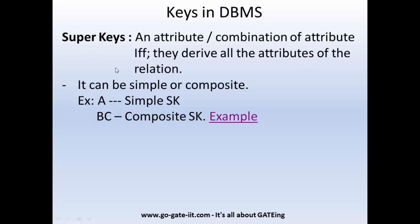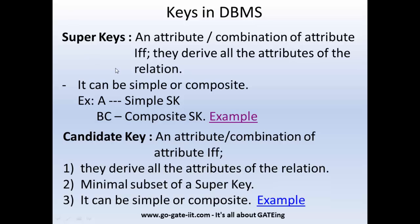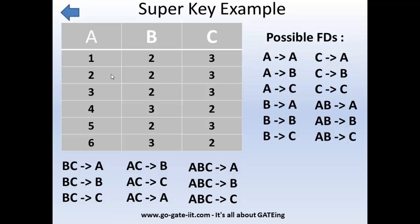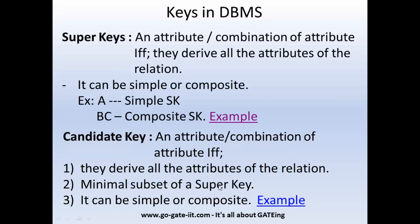Our next key is the candidate key. A candidate key is an attribute or combination of attributes that derives all the attributes of the relation — that is the first condition. Second, it should be a minimal subset of a superkey. It can be a simple or composite candidate key. Now what does minimal subset of a superkey mean?